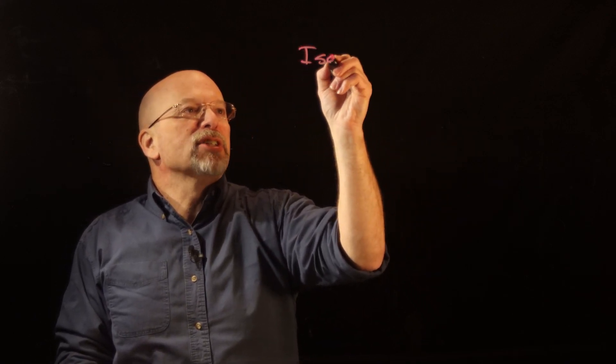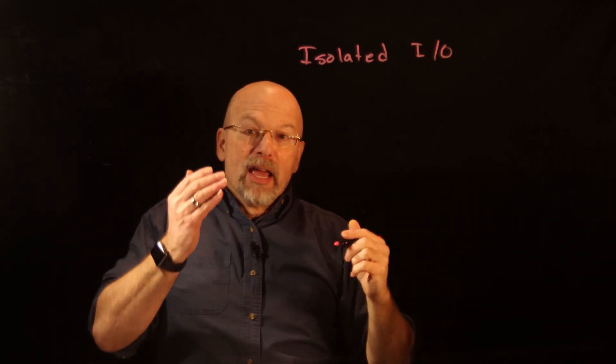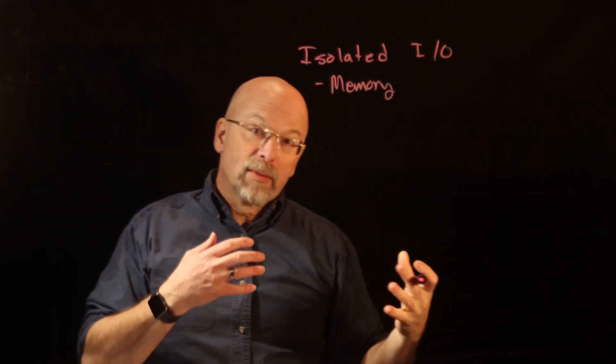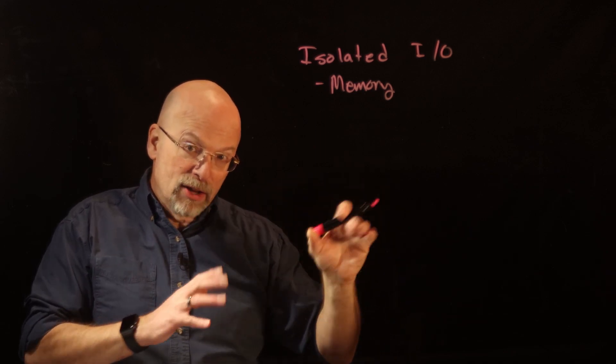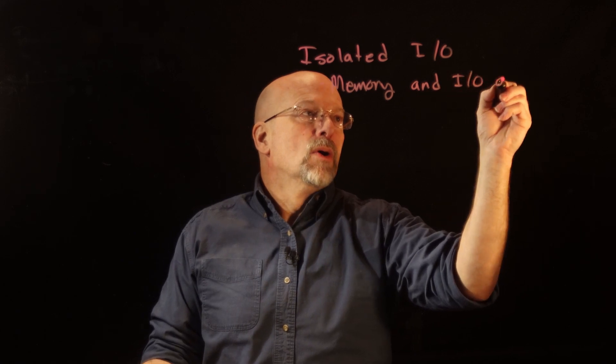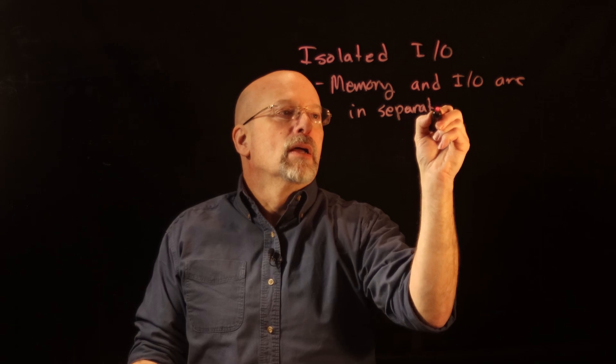There are three ways to create the interface between the processor and I/O devices. The first is called isolated I/O. Isolated I/O means that memory and I/O are in separate memory spaces or address spaces — the interaction the processor has with stored values in main memory and its interaction with I/O are kept separate.